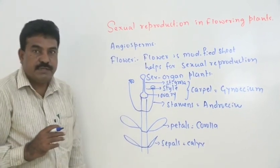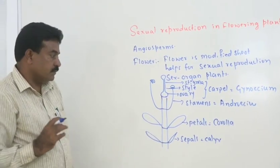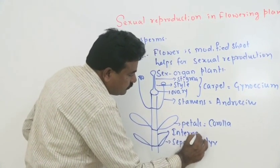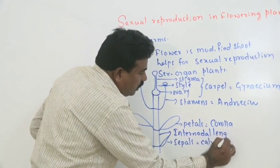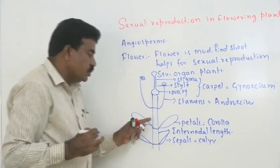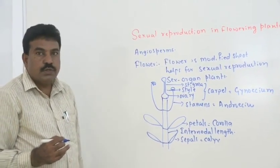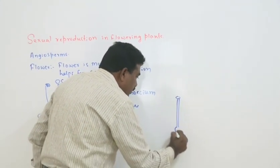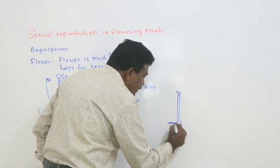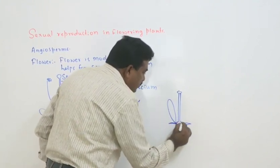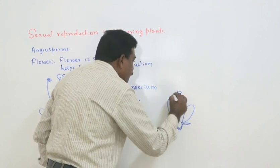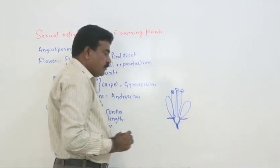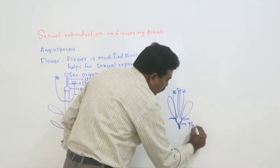In this way, four nodes of the stem are modified to form a flower. One more modification is that the inter-nodal length is reduced — the inter-nodal length of that shoot or stem reduces, resulting in the formation of a flower. Hence, in a typical flower, we have four whorls: calyx, corolla, androecium, and gynoecium. The cup-shaped structure at the base is called the thalamus.